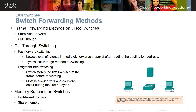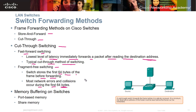Switch forwarding methods on Cisco switches include store-and-forward and cut-through. Cut-through switching, also called fast-forward switching, has the lowest latency — it immediately forwards a packet after reading the destination address. Fragment-free switching stores the first 64 bytes of the frame before forwarding, since most network errors and collisions occur during the first 64 bytes. Fast-forward switching just reads the destination address and sends it; fragment-free switching validates the frame first before forwarding.